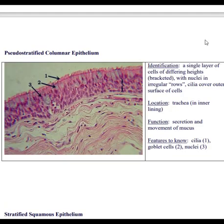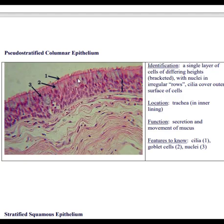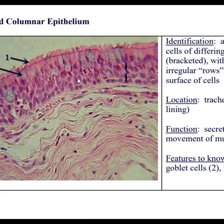This next slide is easy to confuse with the simple columnar slide. It has columnar cells but it's pseudostratified columnar epithelium. 'Pseudo' means fake, 'stratified' means in layers — so this is actually one layer, but because it's smooshed and the nuclei are at different heights it looks like more than one layer. This tissue actually has cilia sticking up: little hair-like projections that can move and wave. Before we had villi, but these are hair-like projections — a key difference.